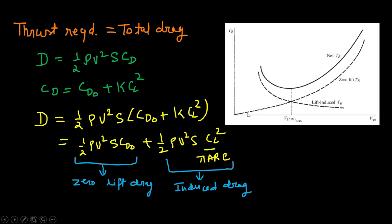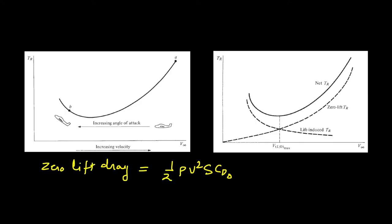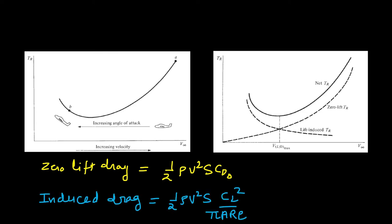As velocity increases, zero-lift drag increases and lift-induced drag decreases. To understand this, consider the formula: zero-lift drag is half rho v squared S CD0, and induced drag is half rho v squared S CL squared divided by pi AR e. From the formula, zero-lift drag is proportional to v squared, so as velocity increases, zero-lift drag increases. This is clear directly from the formula.